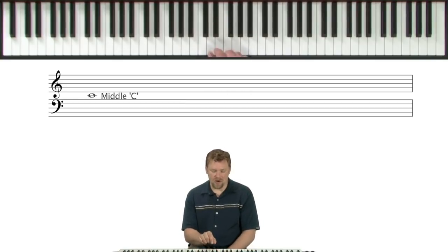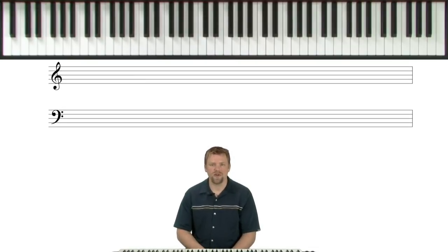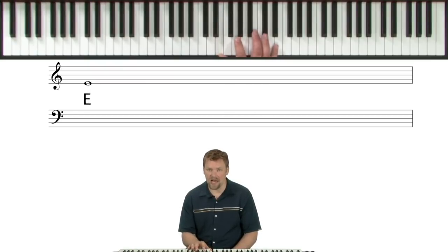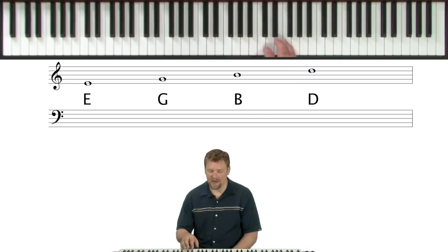So, if that's C and you go up a step, we get to the first line on the top staff. The first line on the top staff is an E. If you skip to the next line, we get a G. To the next line, a B. The next line, a D. And then an F.